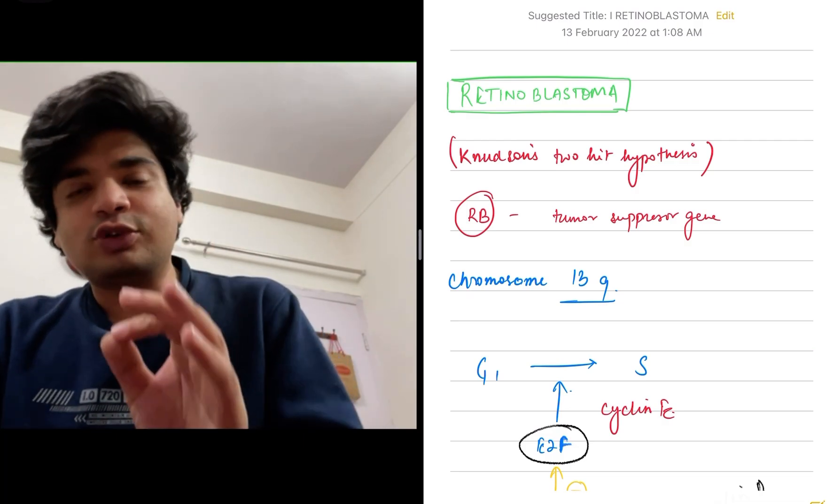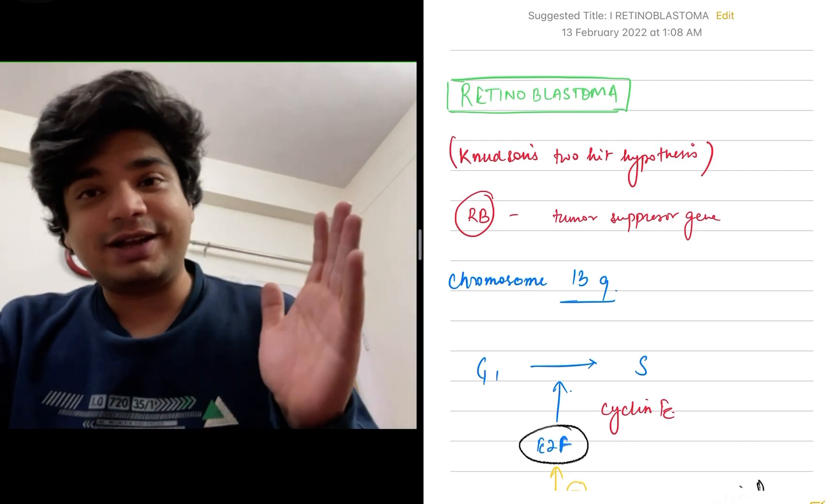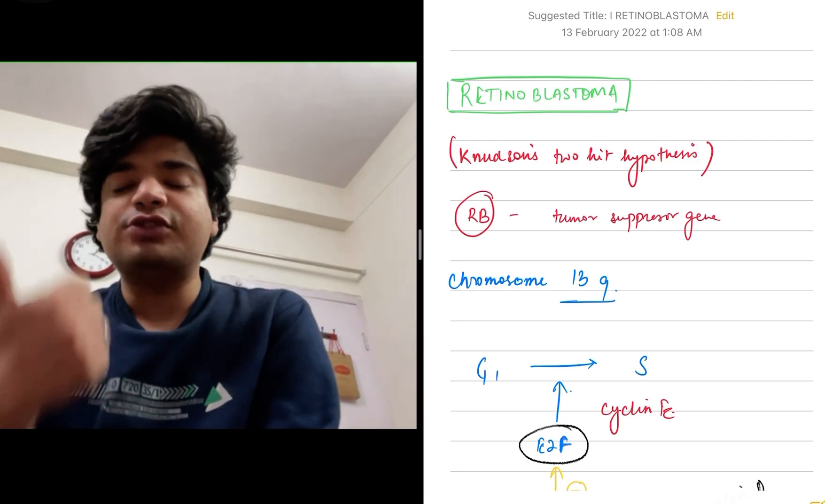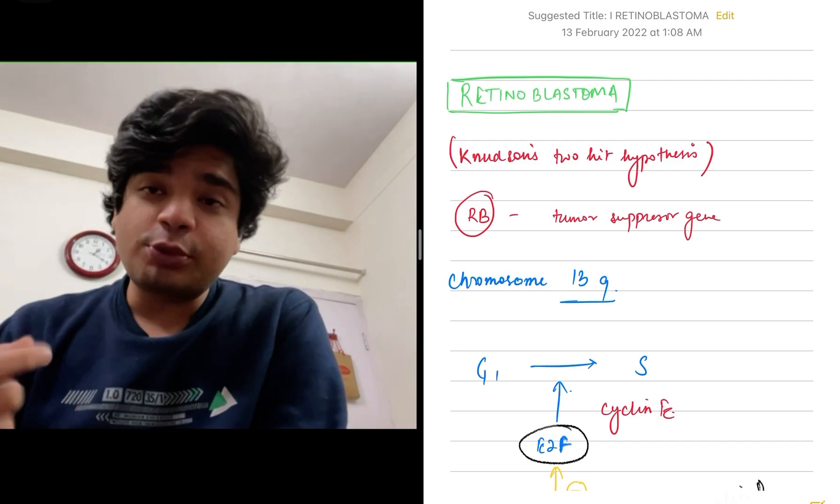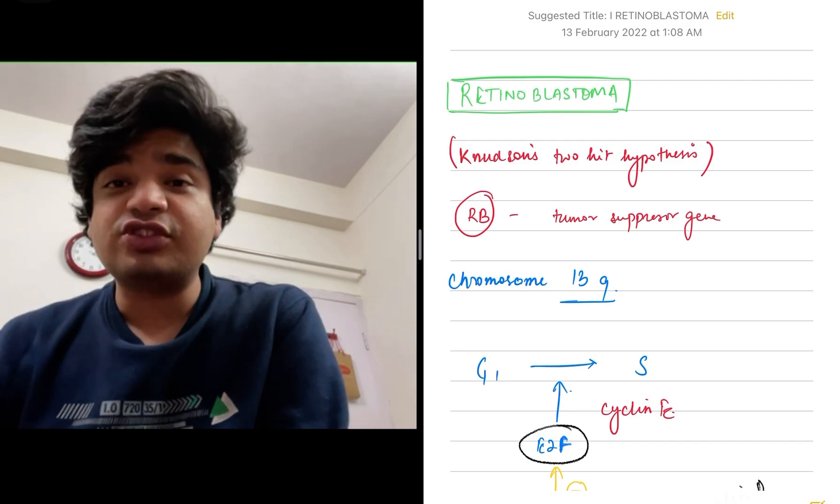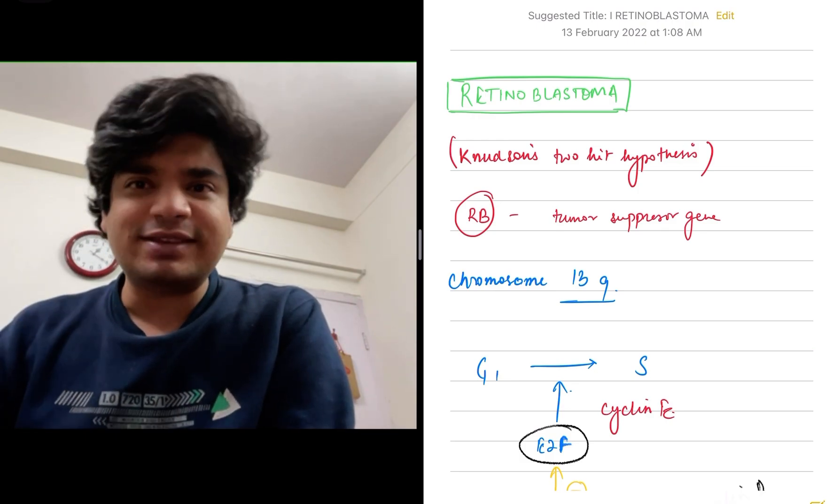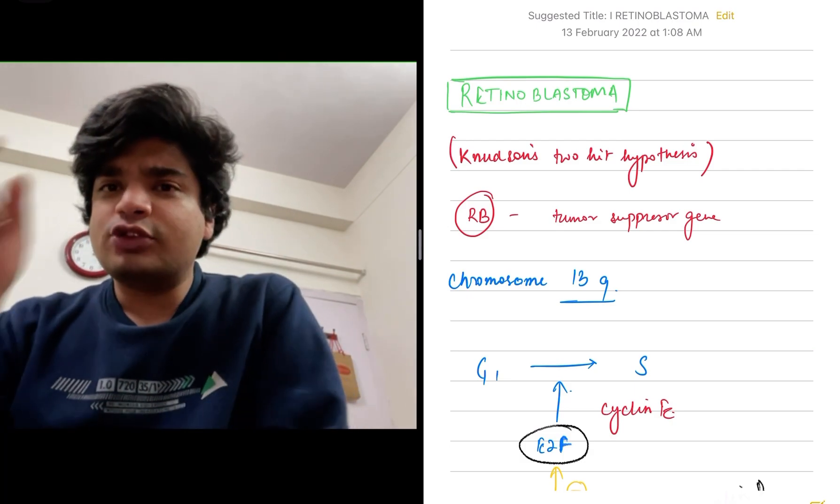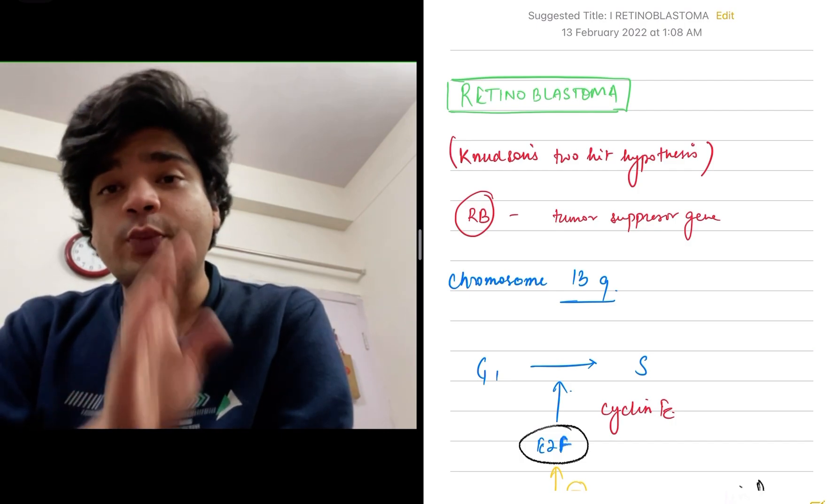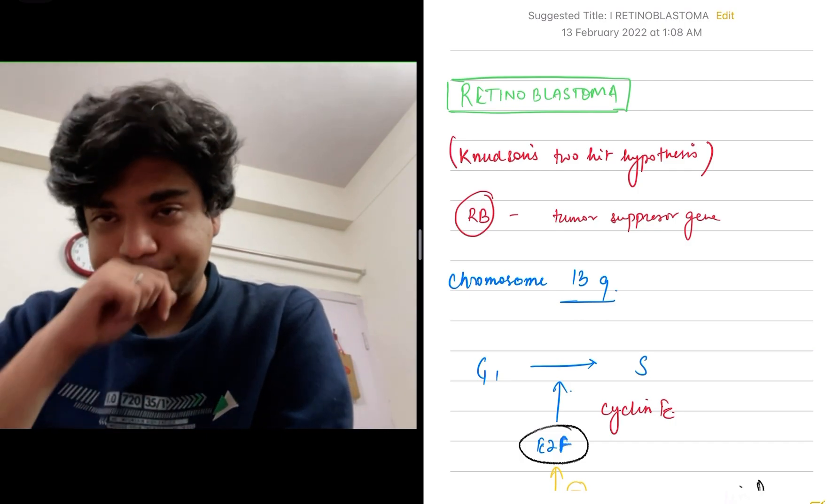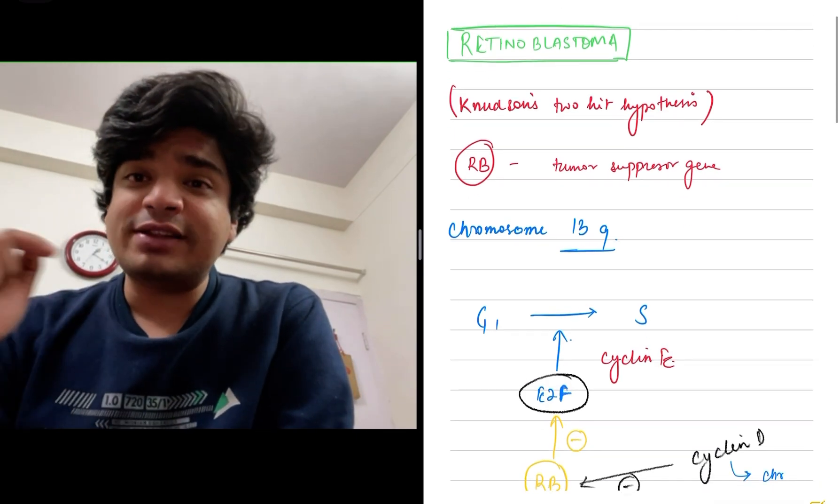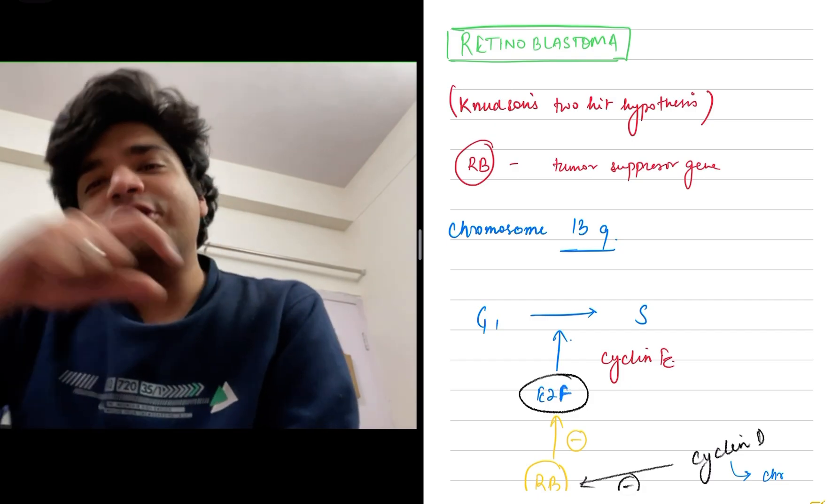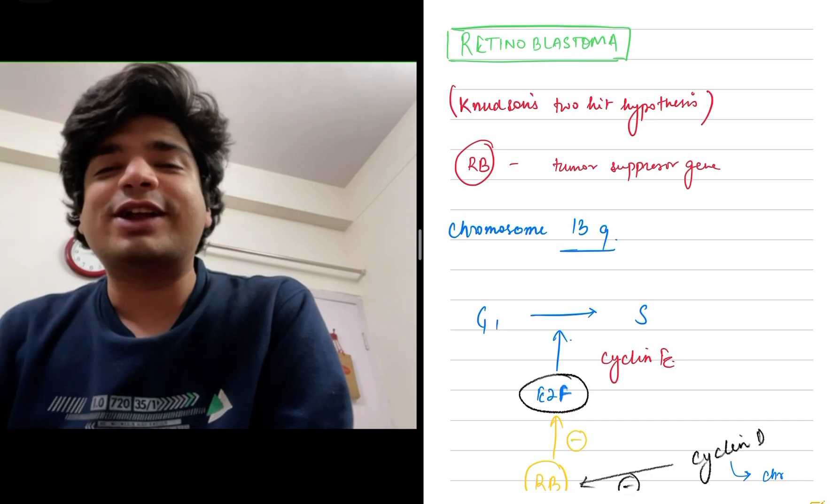RB is a tumor suppressor gene present on chromosome 13q. It was the first tumor suppressor gene to be identified. The cell cycle consists of G1, S, G2, and M phases. The most important transition point is G1 to S because whenever a cell enters the S cycle—the replication phase—it sooner or later has to complete the cell cycle and divide. Here, E2F and cyclin, with cyclin E2F being a factor that propagates the cell cycle, causes this transition from G1 to S.